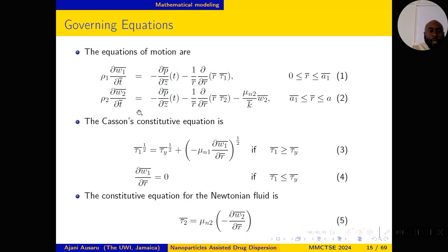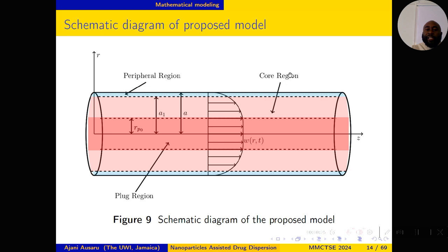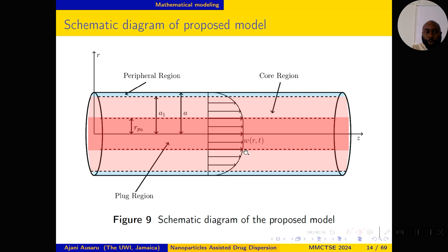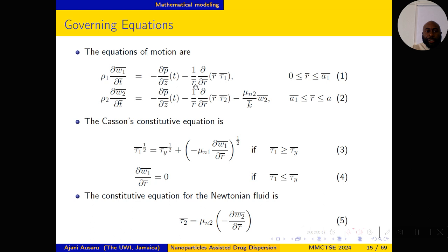Here are the governing equations of motion — the momentum equations. Because we have three distinct regions, we have equations of motion in the respective regions. In the core region from zero to A1, we have the first equation of motion. In the peripheral region, we have equation number two, which includes the Darcy term capturing the permeability of the porous region. The constitutive equation according to Casson is given by equation three, and Newton's law of viscosity is captured in equation number five for the Newtonian peripheral fluid.